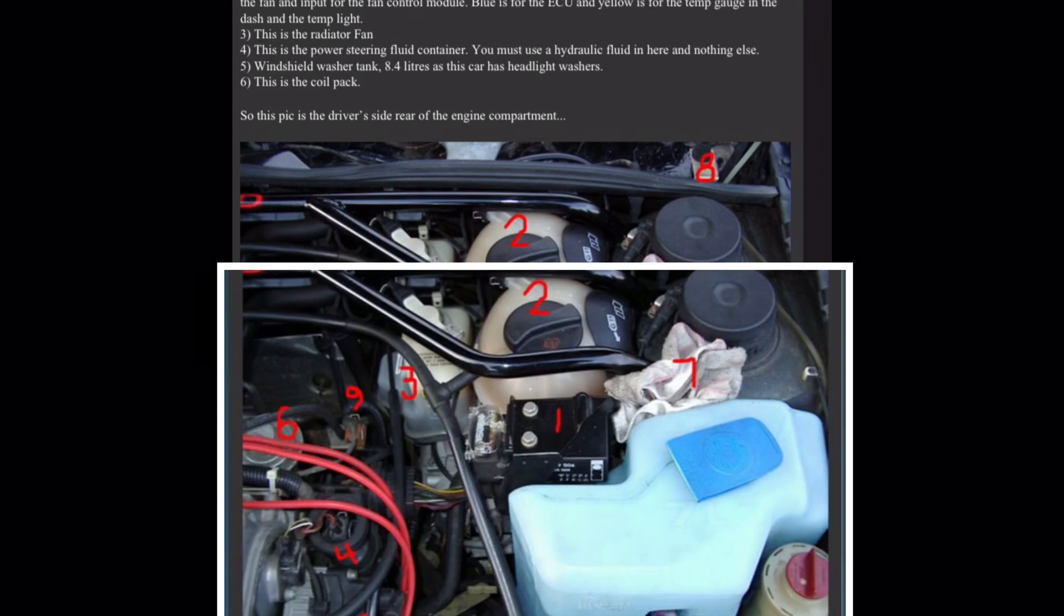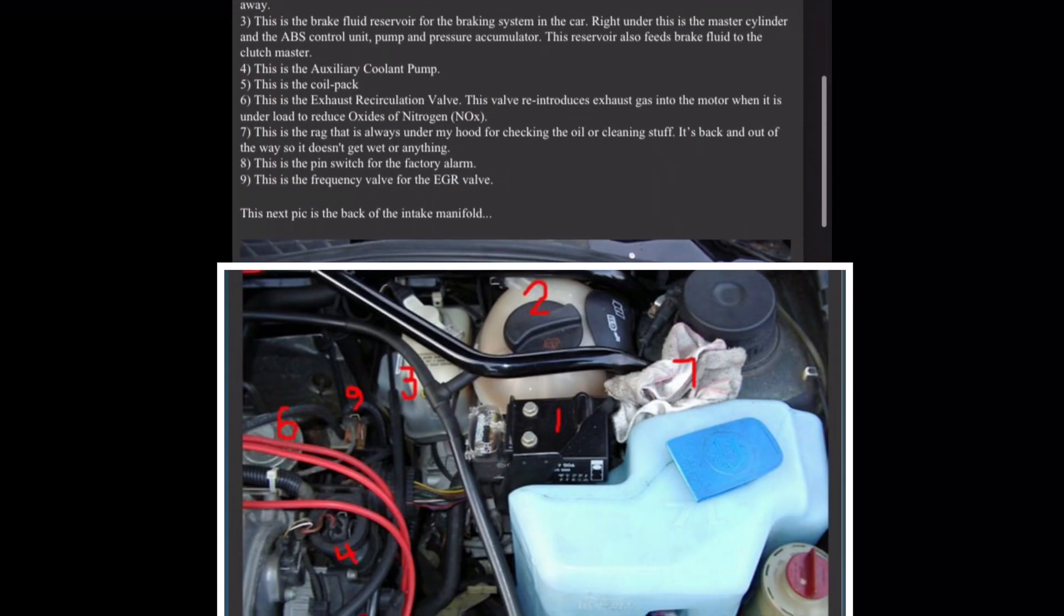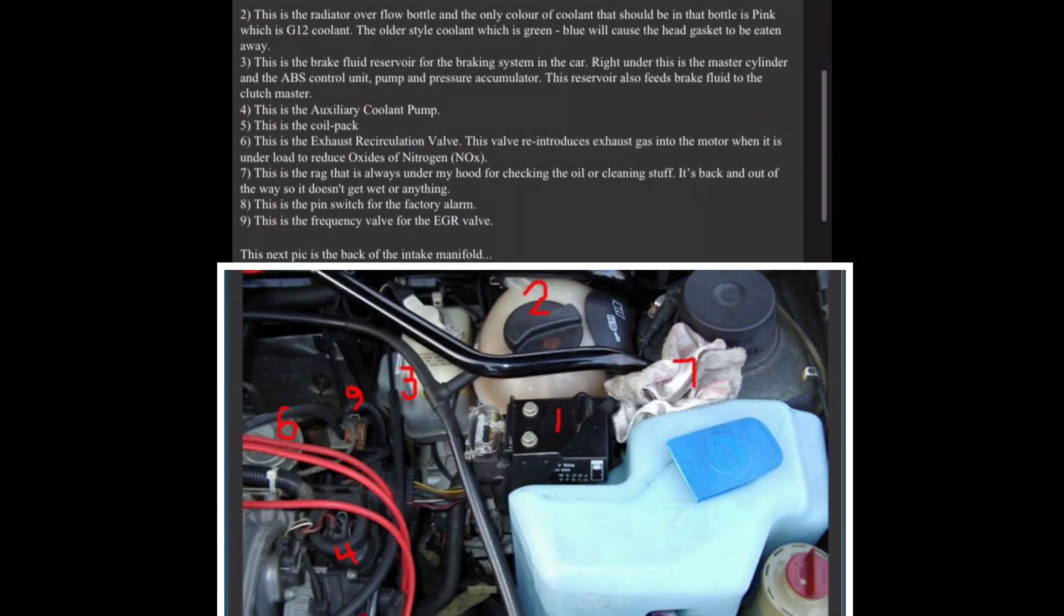This is the radiator overflow bottle and the only color of coolant that should be in that bottle is pink, which is G12. The blue will cause the head gasket to be eaten away. Three, this is the brake fluid reservoir for the braking system in the car. Right under this is the master cylinder and the ABS control unit, pump and pressure accumulator. This reservoir also feeds brake fluid to the clutch master.